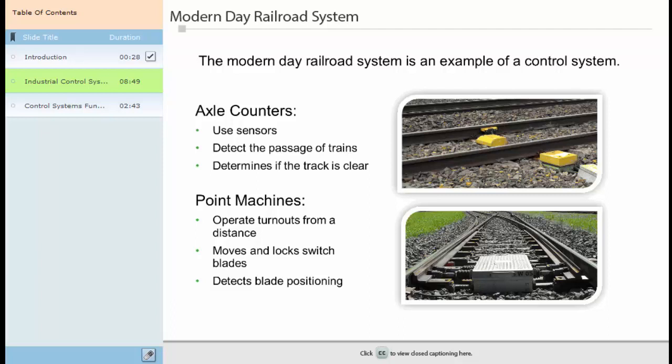Point machines operate railway turnouts from a distance. Within a railway system, they perform functions such as moving and switching blades, locking the blades, and detecting and positioning the blades properly.